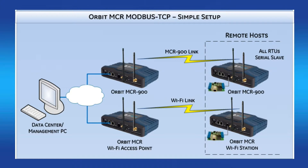In the setup displayed here, two Orbit units are configured for Modbus TCP server mode listening on a specific IP port. When data comes into the unit on that IP port, it will be forwarded out the serial port into the RTU device. The RTU responds with data appropriately based on the IP message it received.